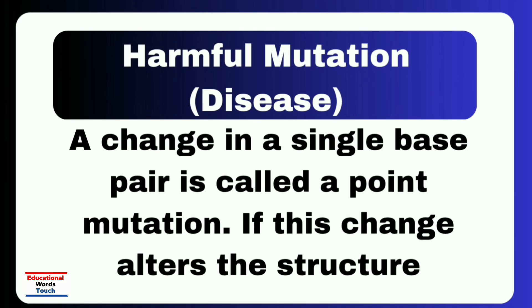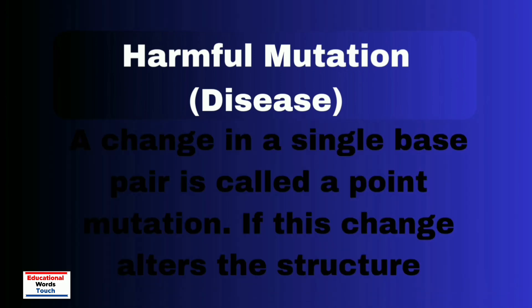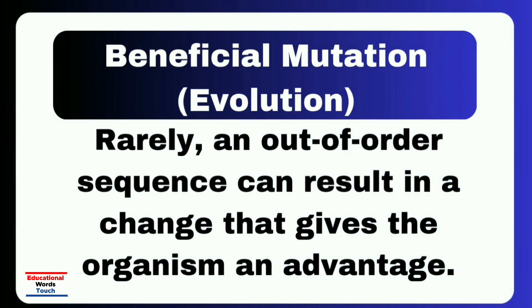The third is a beneficial mutation, which drives evolution. Rarely, an out-of-order sequence can result in a change that gives the organism an advantage. These beneficial mutations are the raw material for evolution.